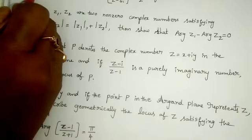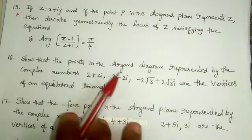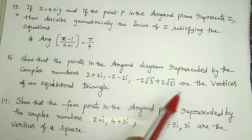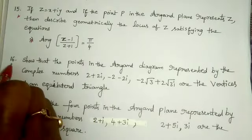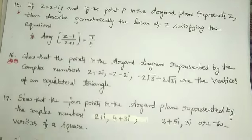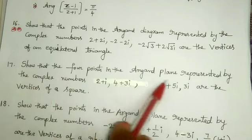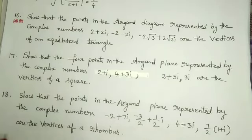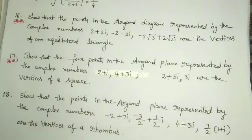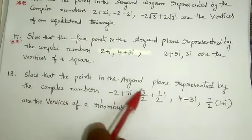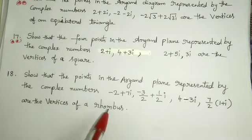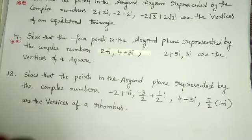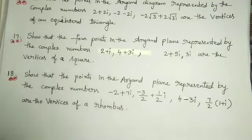The twelfth one is also a very very important question. Next, the sixteenth one: show that the points in the Argand plane represented by the complex numbers 2 plus 2i, minus 2 minus 2i, minus 2 root 3 plus 2 root 3 i are the vertices of an equilateral triangle — the most important, most frequently repeated question. Next one: show that the four points in the Argand plane represented by the complex numbers 2 plus i, 4 plus 3i, 2 plus 5i, 3i are the vertices of a square. Also, show that the points minus 2 plus 7i, minus 3 by 2 plus 1 by 2 i, 4 minus 3i, 7 by 2 times 1 plus i are the vertices of a rhombus. These are all very very important forms of questions.